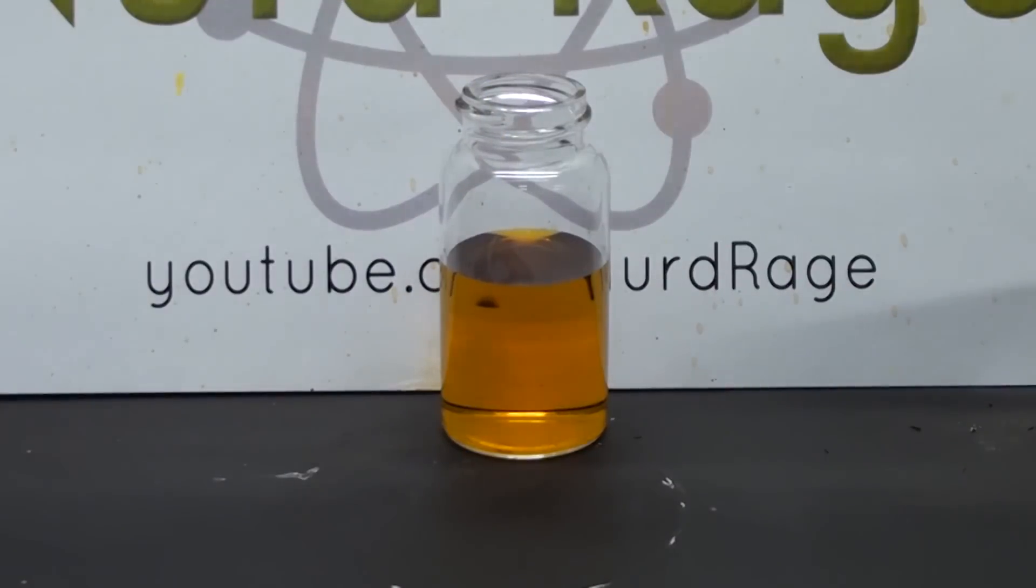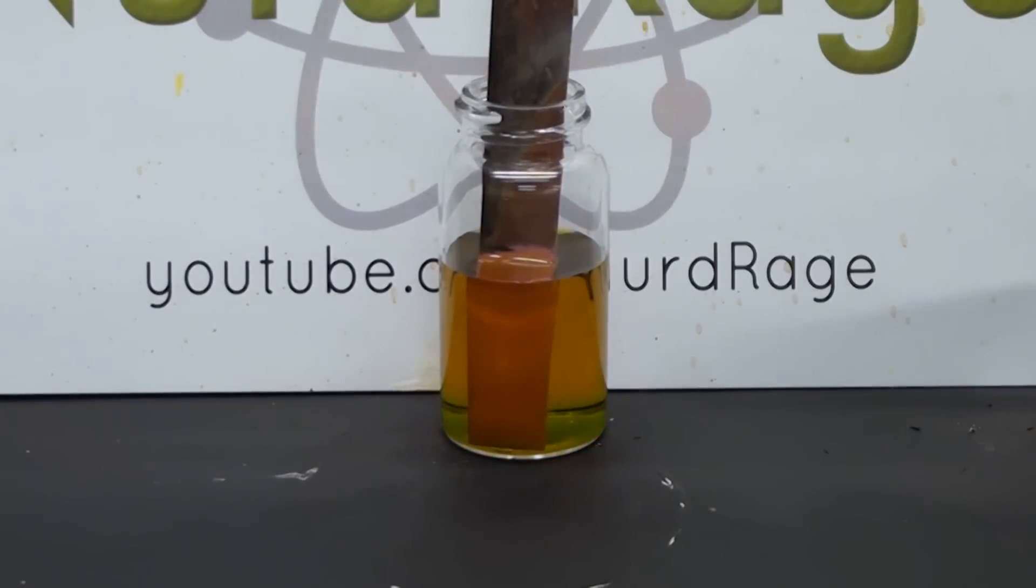Greetings fellow nerds. I've gotten a lot of requests for this so in this video we're going to make ferric chloride, a useful chemical to etch copper clad printed circuit boards.